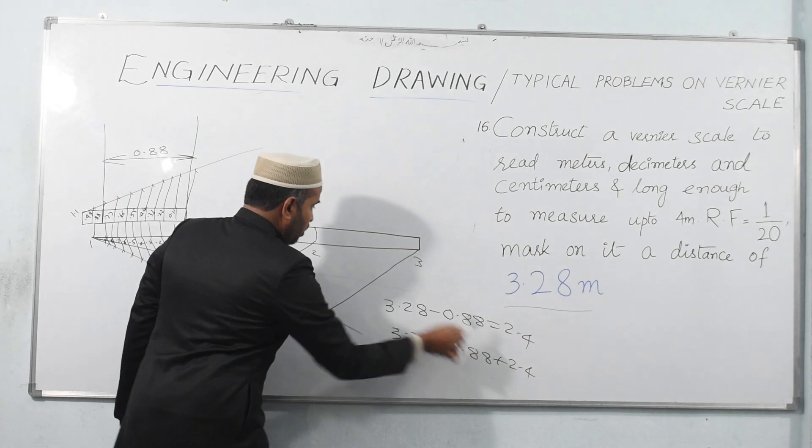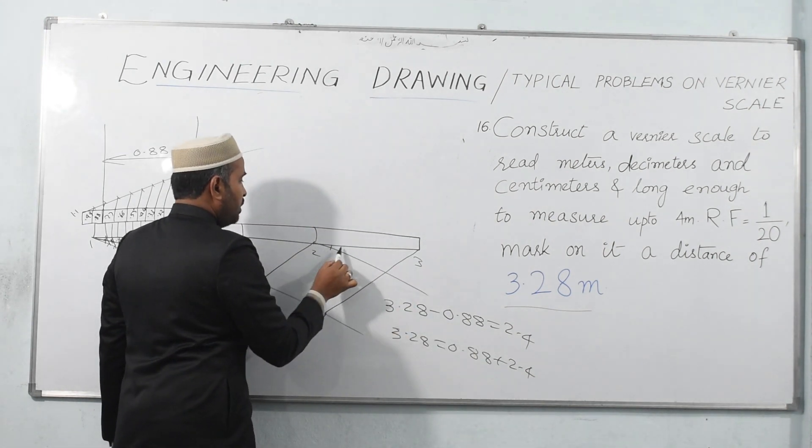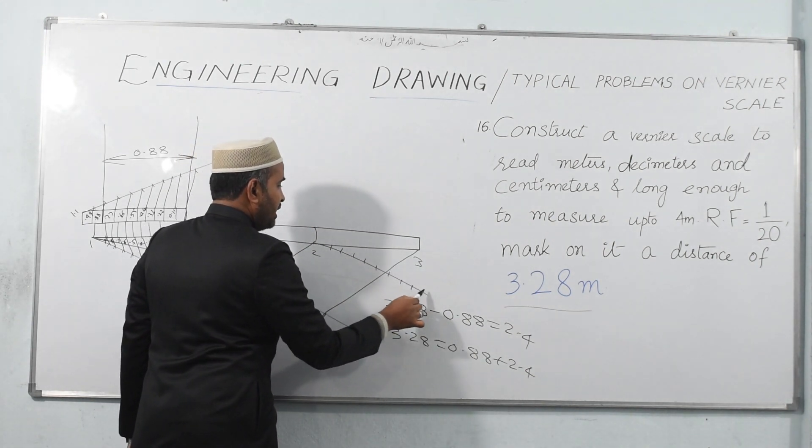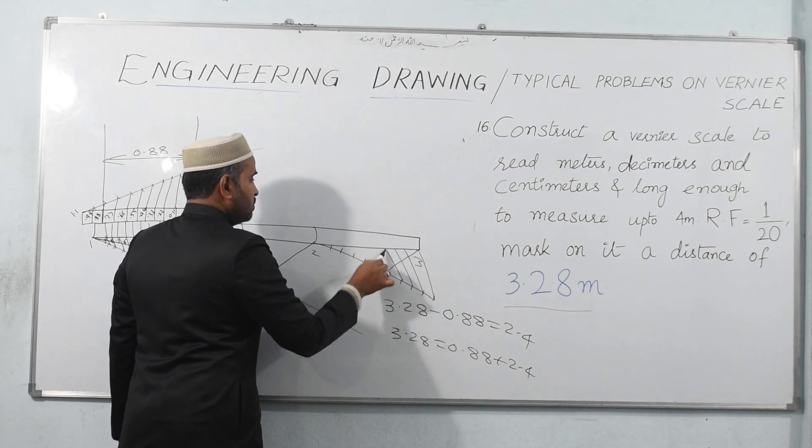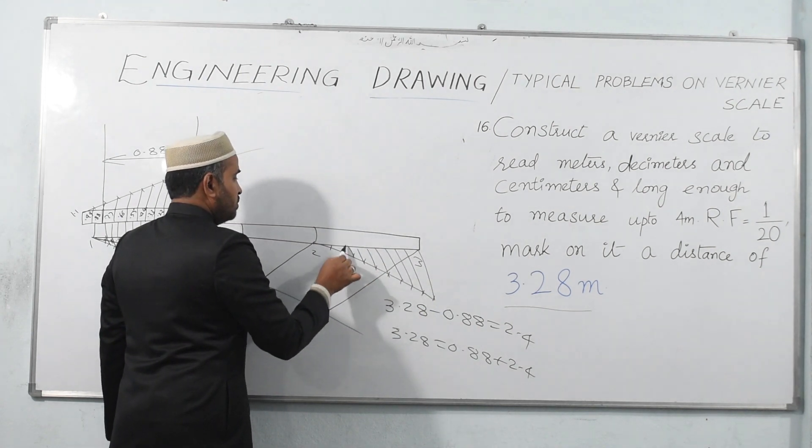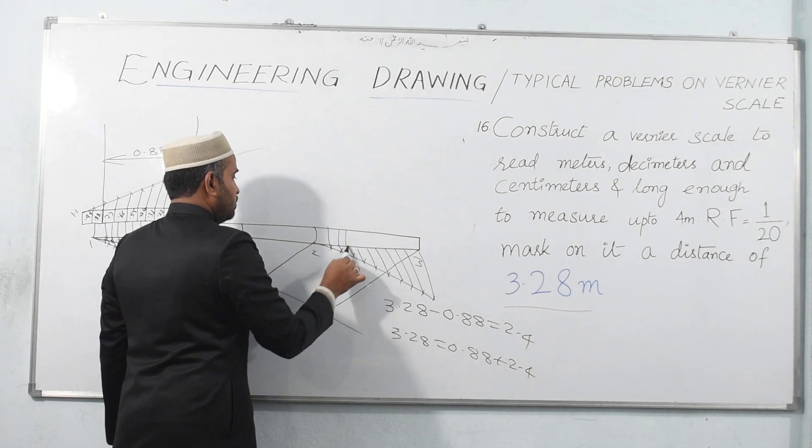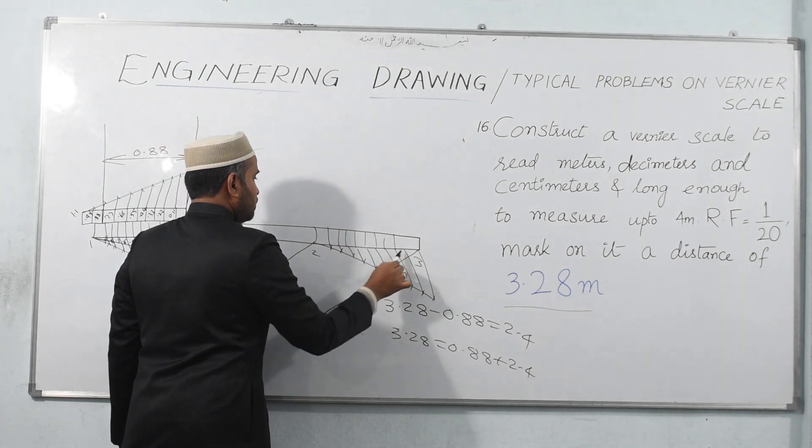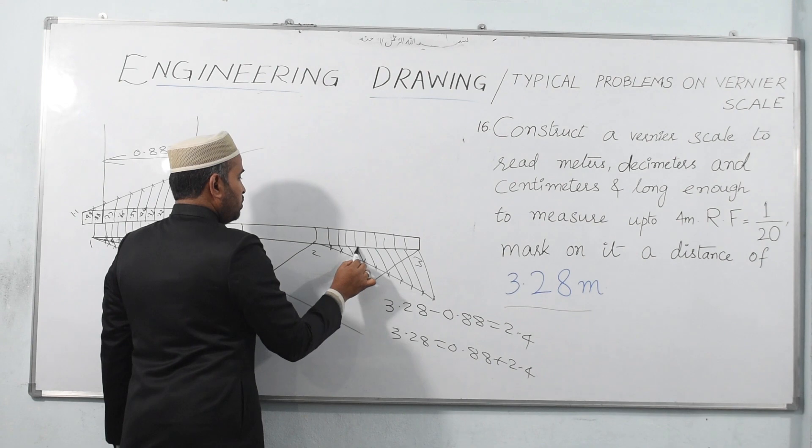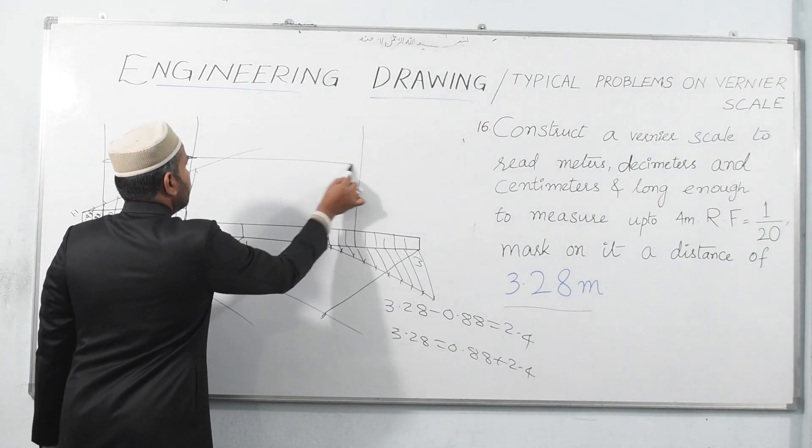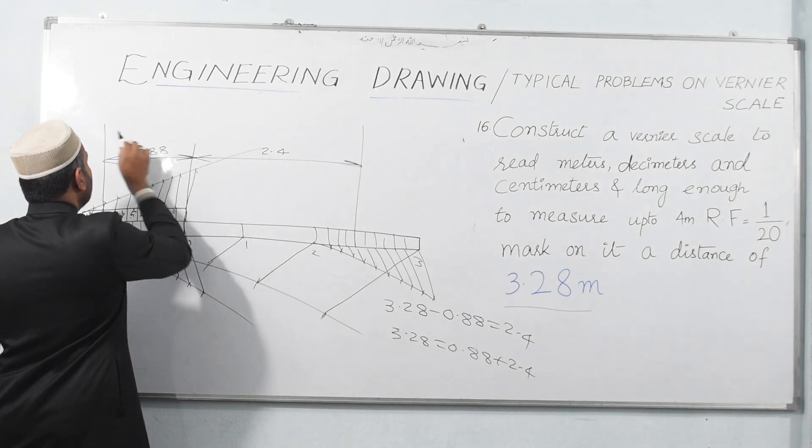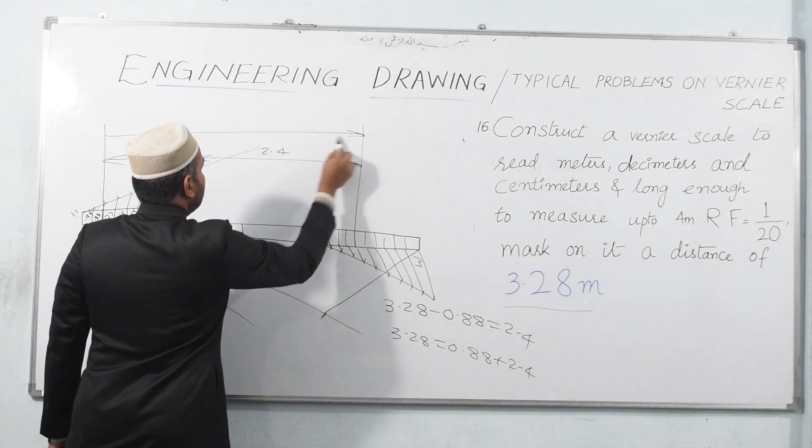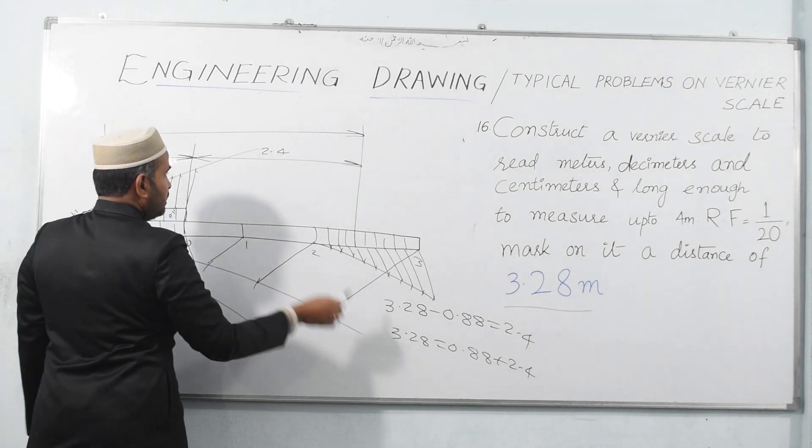2.4 between 2 and 3: 1, 2, 3, 4, 5, 6, 7, 8, 9, and 10. So 1, 2, 3, 4 - that's 2.4. How much is it? 3.28.